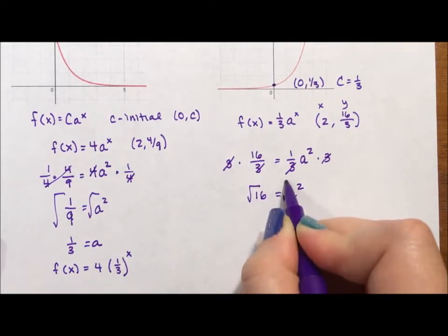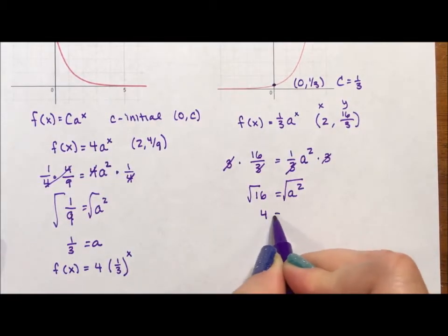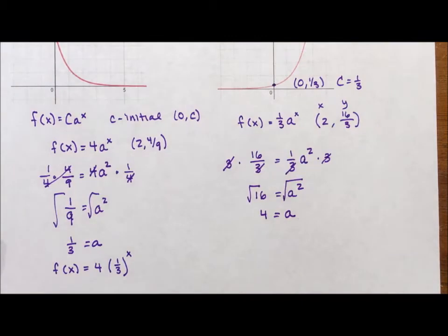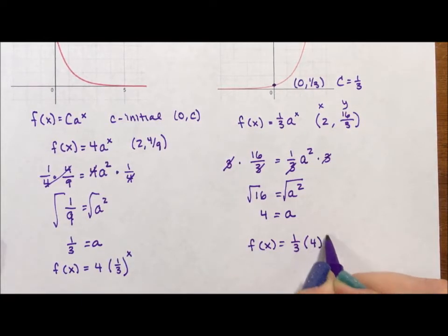And again, I'm going to square root. Again, a has to be positive. So I'm just going to take a equaling 4. Dump negative 4 as being illogical for this problem. And then I have all the parts I need. f(x) = (1/3)·4^x.